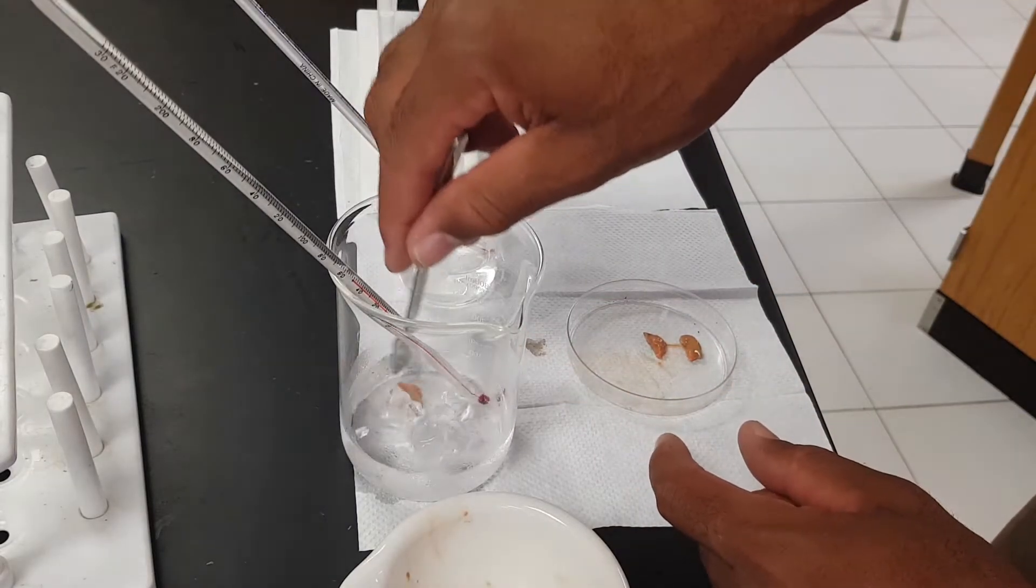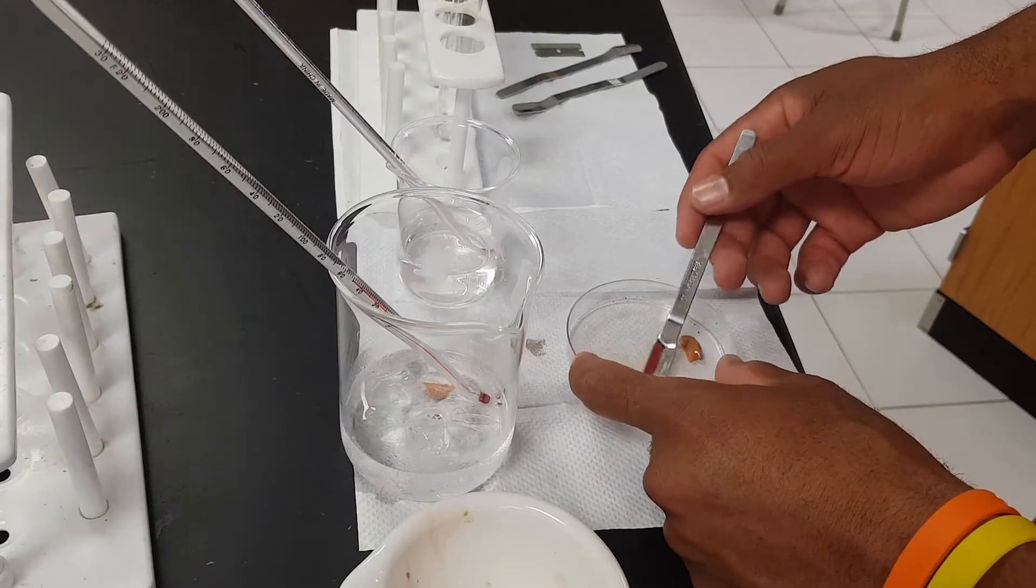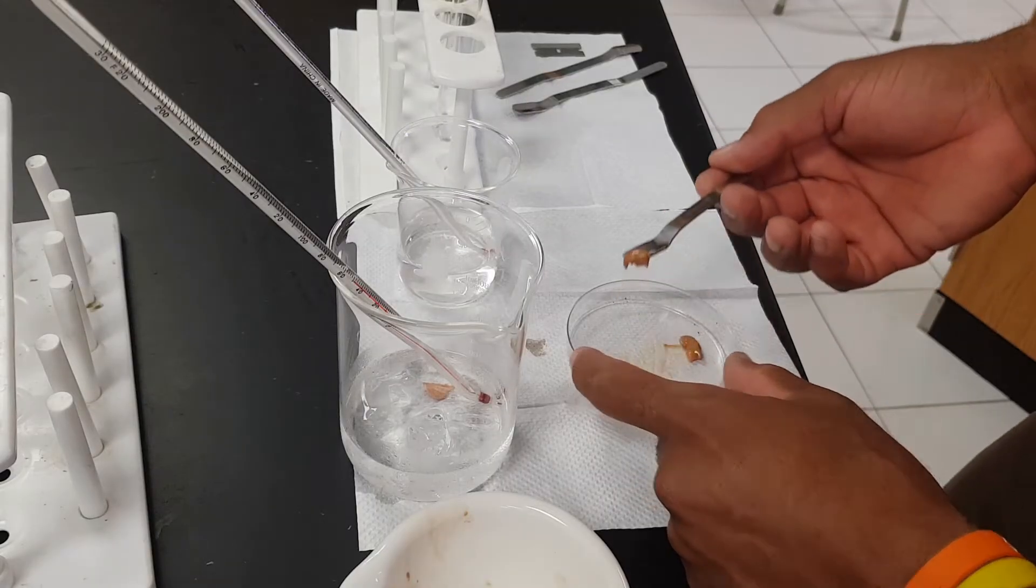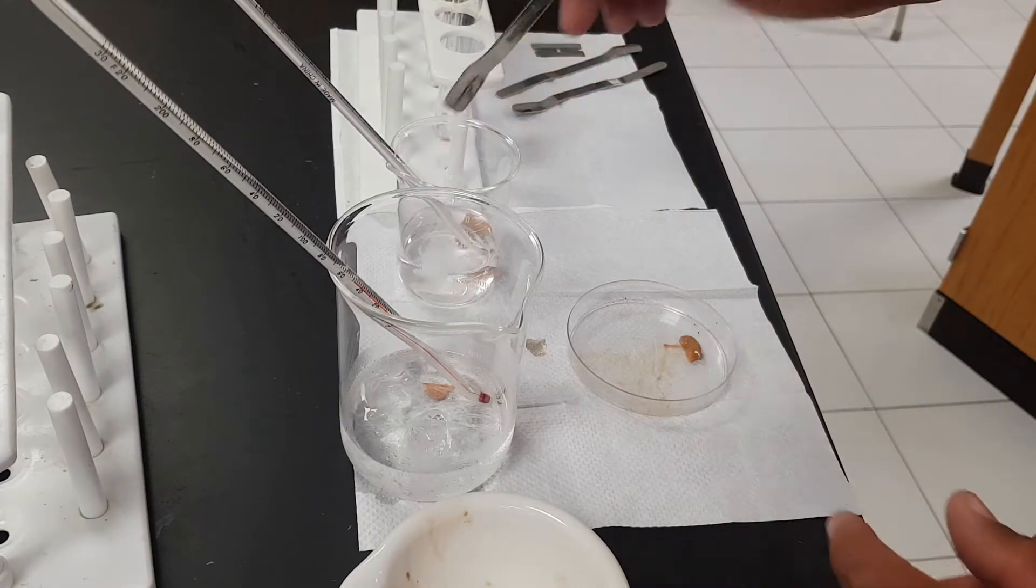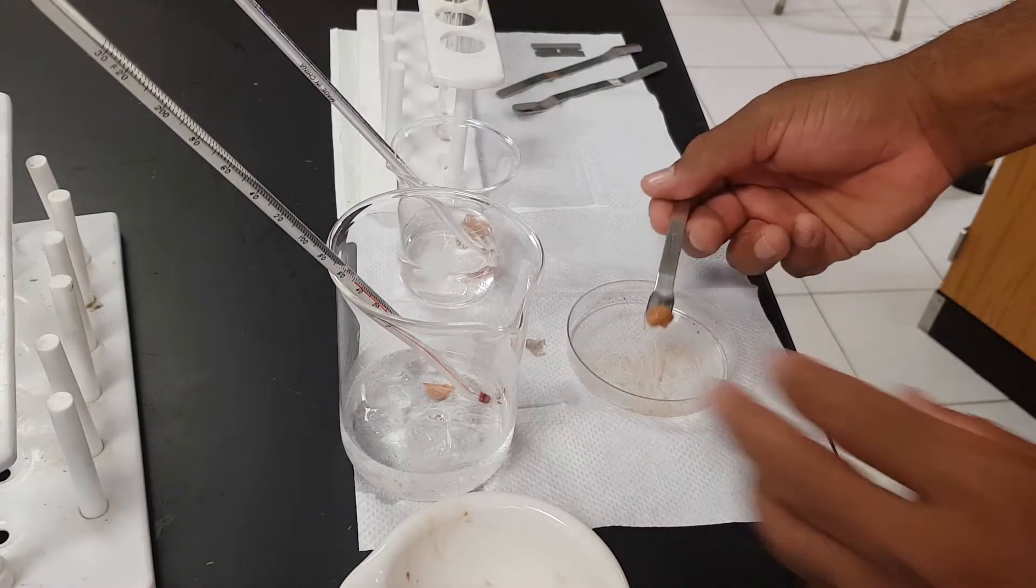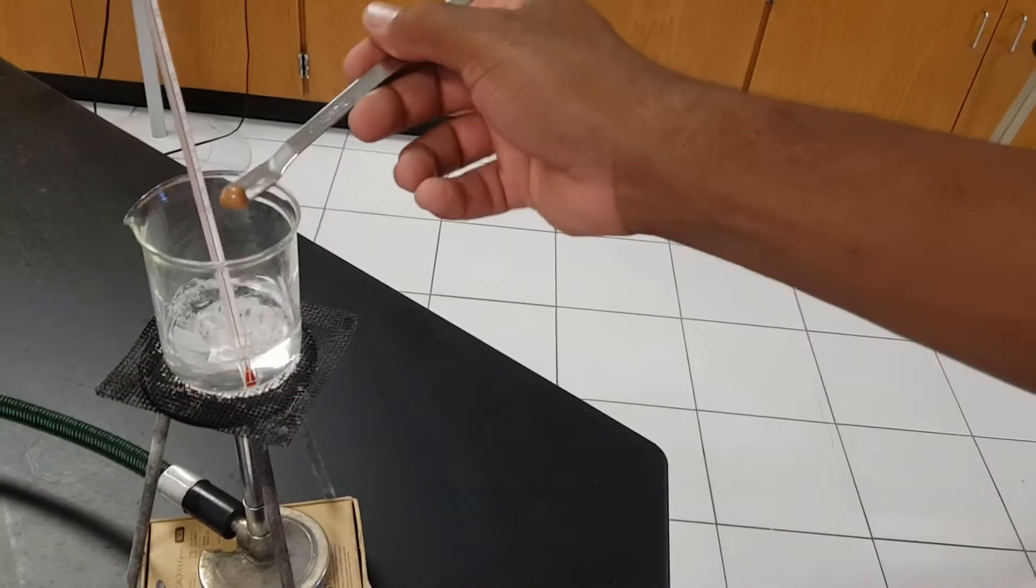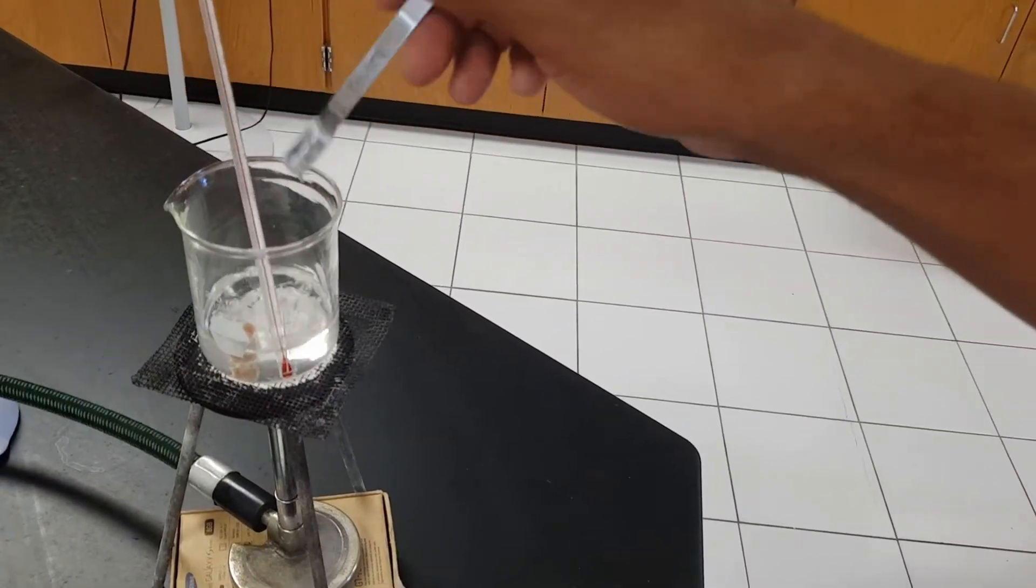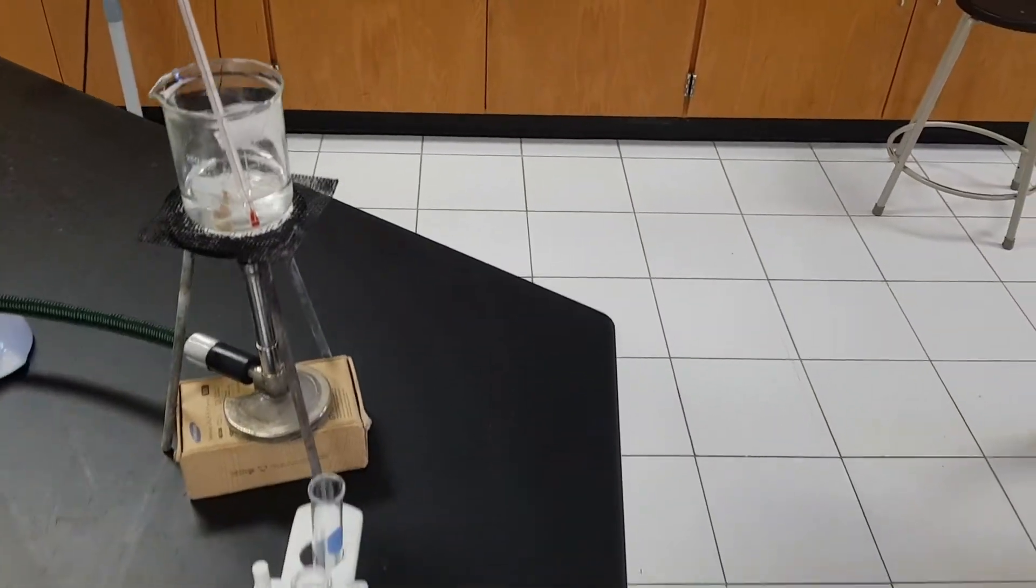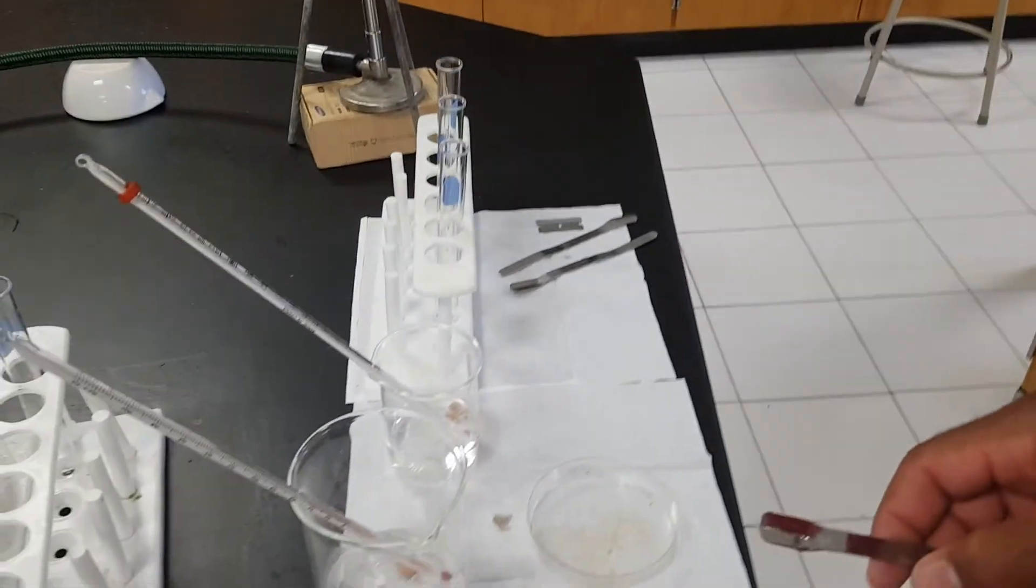Allow them to sit in the different temperatures for approximately three minutes. Pour this into the boiling water and again ensure that you take a note of the temperature as well.